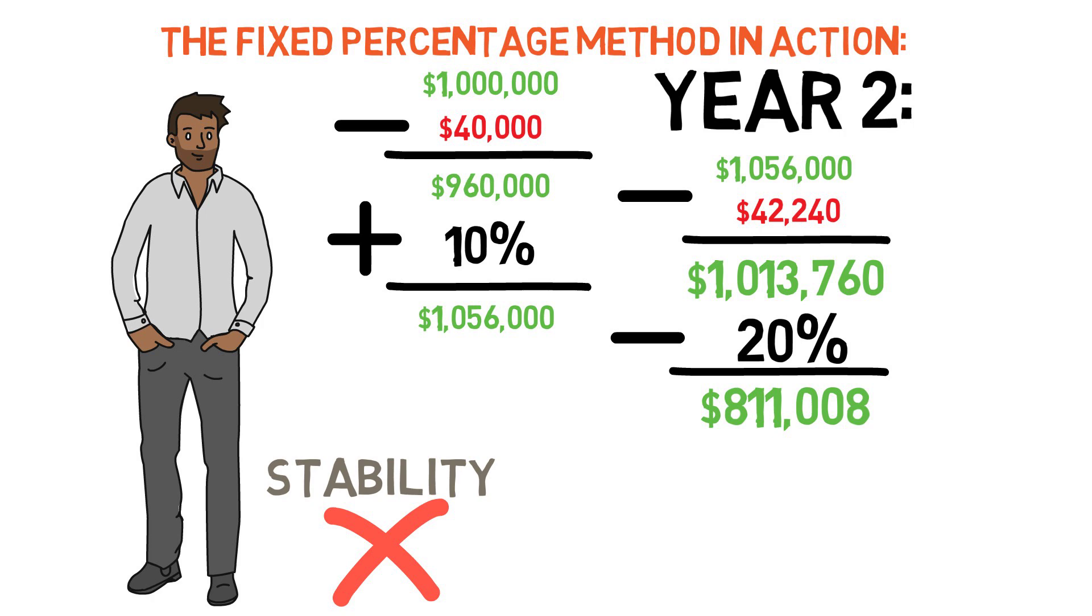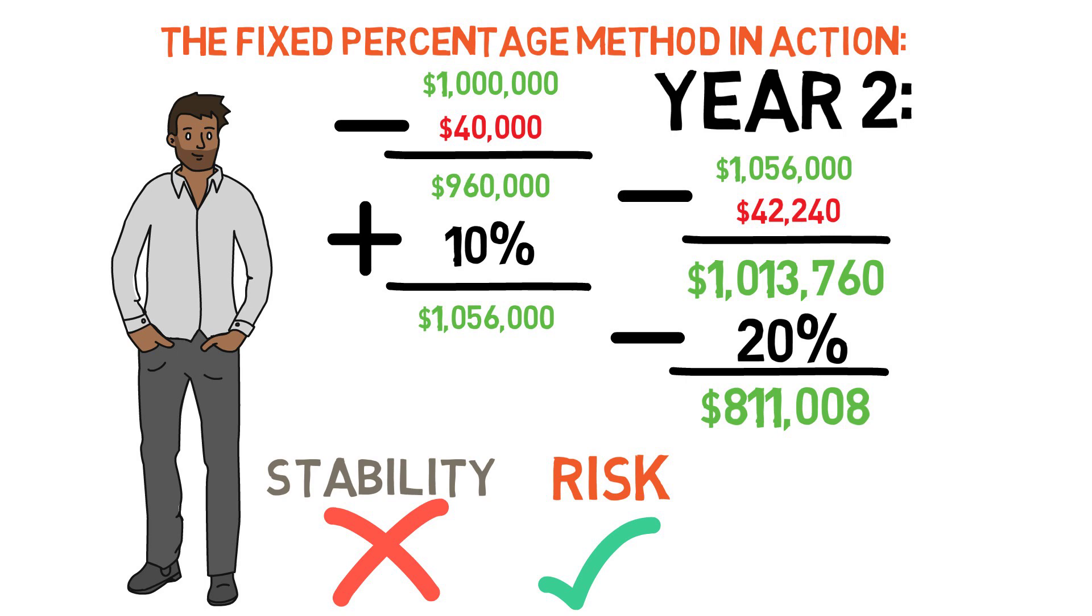As you can imagine stability is something that this strategy has a very low score in given that the value of a nest egg, especially if it's invested in something volatile like stocks, can grow or shrink by 20, 30, or even 40% over the course of a couple of years. The bright side is that assuming you're not withdrawing something crazy like 20% of your nest egg every year your risk of running out of money is theoretically very low.